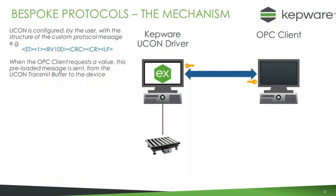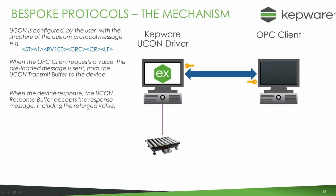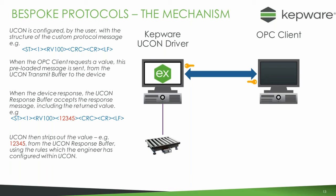When the OPC client requests a value, that message structure is sent via UConn's transmission buffer to the device. When the device responds, the UConn response buffer accepts the response. A typical response might include the value 12345. Within UConn, you set rules to locate that value in the response string, strip it out, and pass it back to the OPC client. So you create custom rules for sending the message and custom rules for extracting the response value.